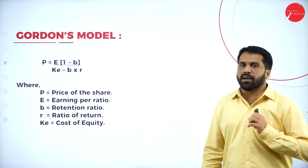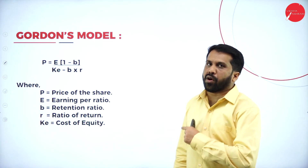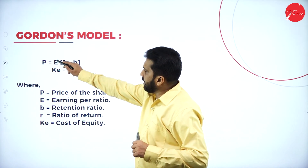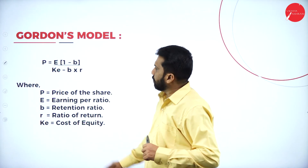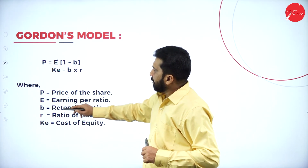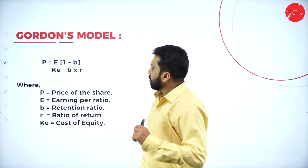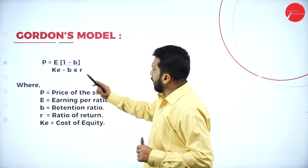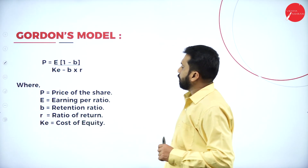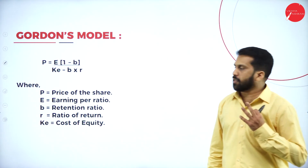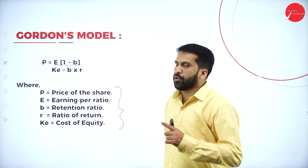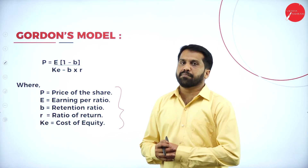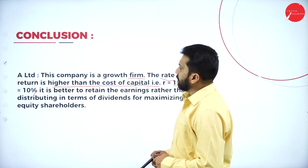The formula for Gordon's model is: P = E(1 − B) / (Ke − Br). Here, E is earning per share, B is the retention ratio, Ke is cost of equity, and R is the rate of return. Before you come for the next session, please remember this formula. We'll go for the problems.